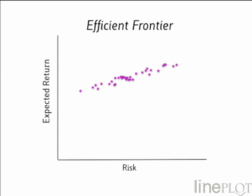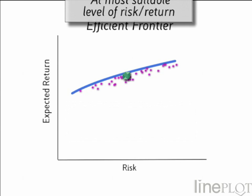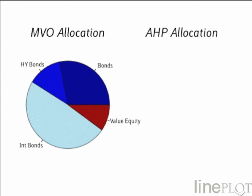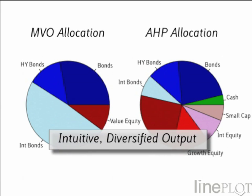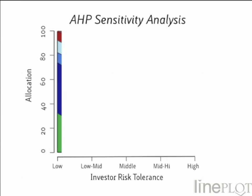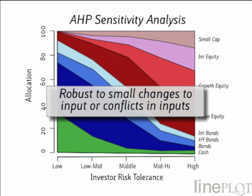The results of an AHP asset allocation are generally quite close to the risk-return efficient frontier under typical market conditions. More importantly, the AHP portfolio is located at the correct position on the curve based on the rest of the investor's needs and preferences. Portfolios generated by AHP are generally more diversified and intuitive than those generated by classic mean variance optimization. The mean variance method often produces solutions concentrated in a single asset class because it gives too much credibility to forecasts of risk and return. Unlike mean variance, a small change in AHP inputs does not lead to large changes in the output. Incremental changes to questions result in incremental allocation changes, providing intuitive feedback. The underlying algorithm is very good at dealing with conflict, so that mutually exclusive inputs will still yield sensible results.